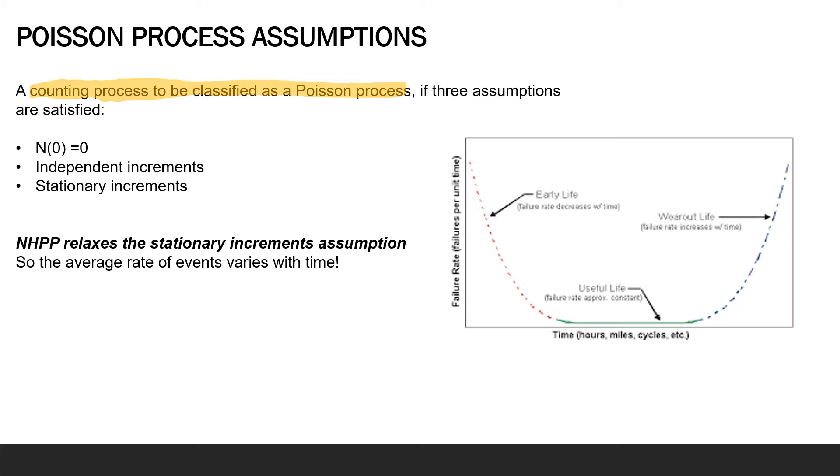The first two assumptions are that firstly there are no failures when we start the clock, and secondly that the number of events in non-overlapping intervals are independent.